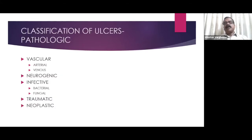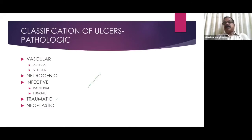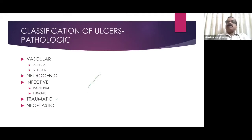Ulcers can be classified depending upon the pathology. They could be vascular — either arterial or venous — or neurogenic, infective (most commonly bacterial or fungal, very rarely viral), traumatic, or neoplastic. These are the classifications based on pathology.